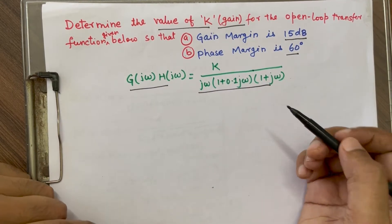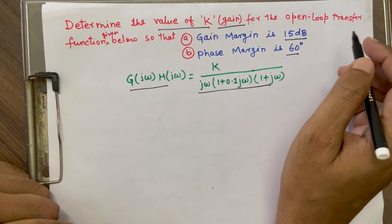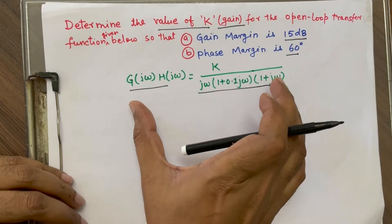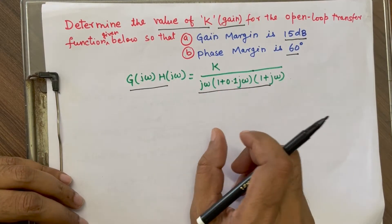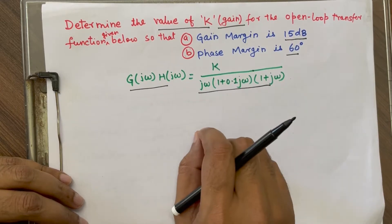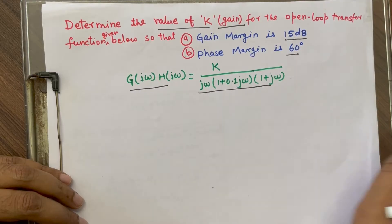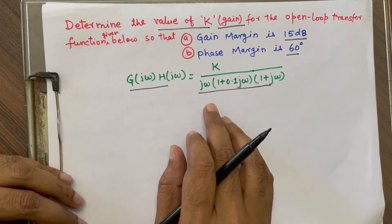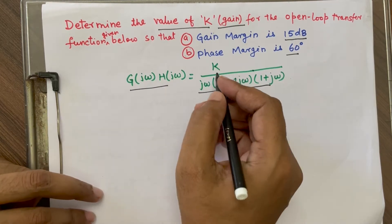As you know, gain margin is given in terms of dB and phase margin is in terms of angle. To find out this, we can use a Bode plot, but we can also do it without a Bode plot. I will be taking the without-Bode-plot method, just by doing manual calculation, and we will find out what will be the value of K.